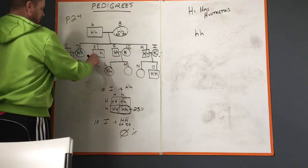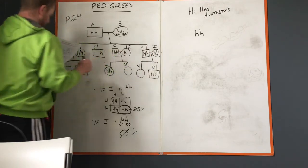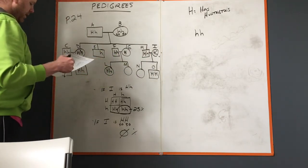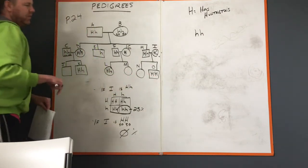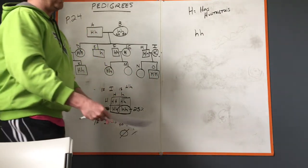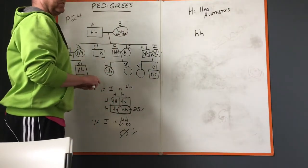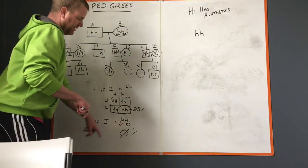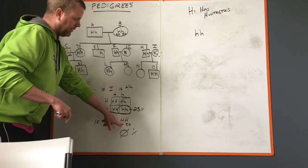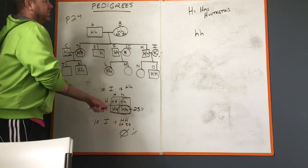Last question: could person O ever have a kid without Huntington's? And the answer is nope. 100 percent of the time gonna get a big H, either that one or that one. And that is the pedigree on page 24.